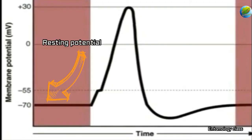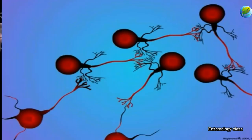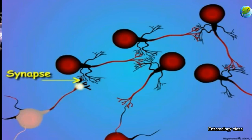So far we have talked about two potentials: resting potential, which is created due to the permeability of different ions, and action potential, which is caused by the depolarization and repolarization of the neurons. There is a gap between two neuron cells called a synapse. How does the information in the form of an electrical impulse pass to the next neuron when there is a gap or synapse present between the two neurons?